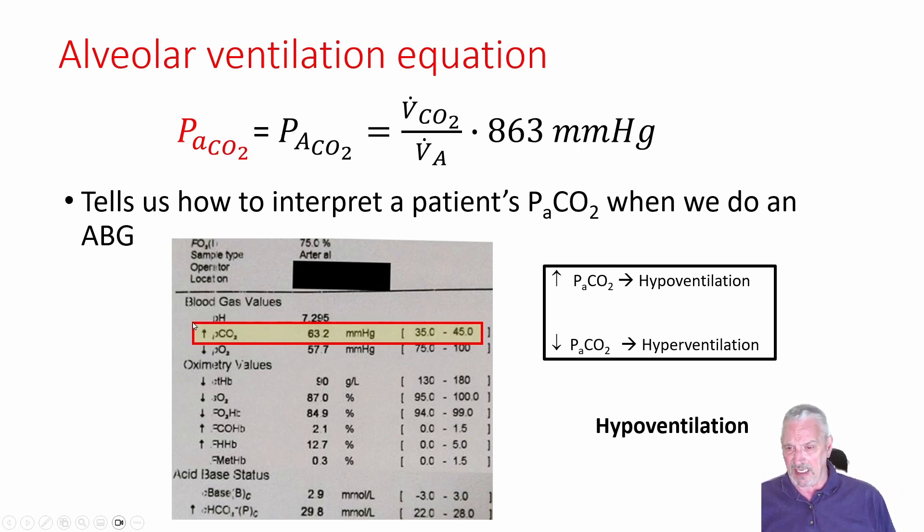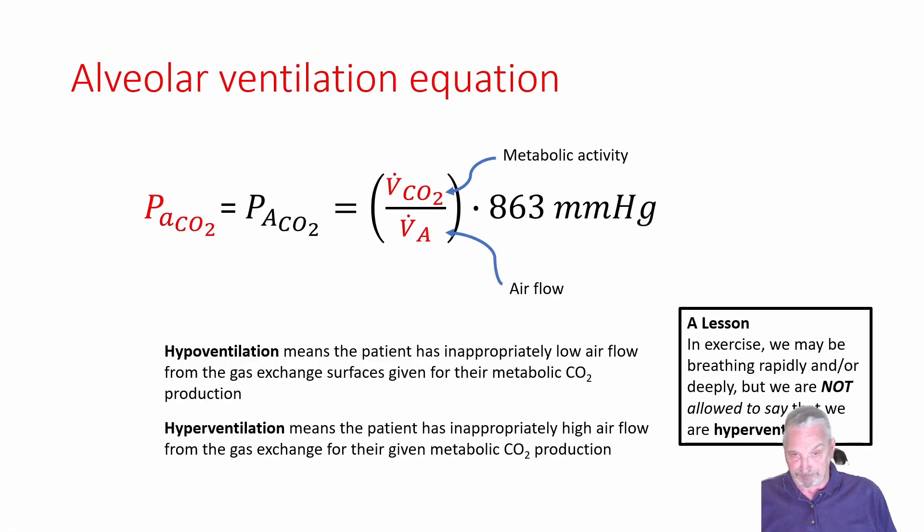Usually we're looking at acid-base status when we look at arterial blood gases. But the other thing you should look directly at is the CO2 because it tells you directly about a patient's hypoventilation or hyperventilation. And we see that in this particular blood gas, the patient's CO2 is 63.2, which is above the normal range. And so we conclude that this patient is hypoventilating. Just by definition, they're hypoventilating because their CO2 is high.